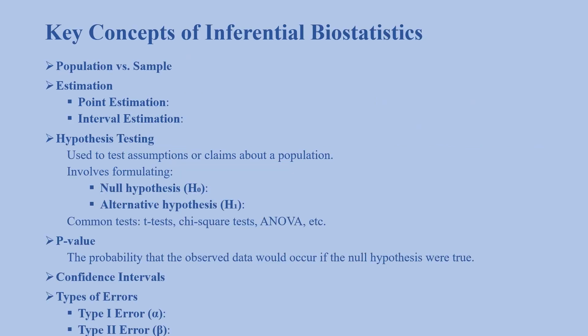The key concepts of inferential biostatistics: First is population versus sample. The population is the entire group you want to study, and the sample is a subset of the population from which data is actually collected.